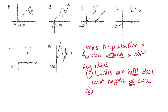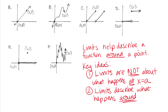The second important thing is to understand that limits describe what happens around x equals a. We already have specific symbols from algebra to describe what happens at a point, and we're going to have different notation to describe what happens around a point. So for all of these functions we have a point at (1, 1), so we can use function notation — f(1) = 1 — meaning when x equals 1, the output or y is also 1.